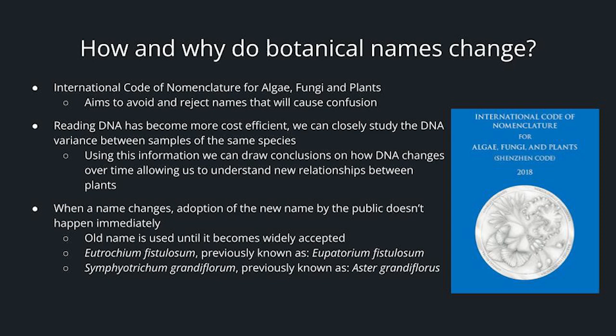You may see examples such as Eutrochium fistulosum, previously known as Eupatorium fistulosum, or Symphyotrichum grandiflorum, previously known as Aster grandiflorus. In these two examples, the Eupatorium genus was broken into smaller pieces — all the Joe Pye weeds now fall under Eutrochium, going from about 2,200 different plants down to only a handful. With the aster change, Symphyotrichum is now a genus that designates North American species of aster, so if you ever see a plant under that genus, you can know it is native to North America.